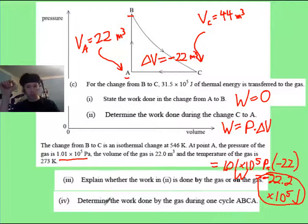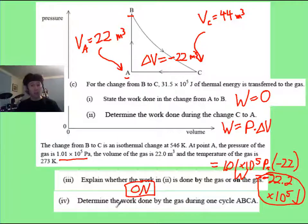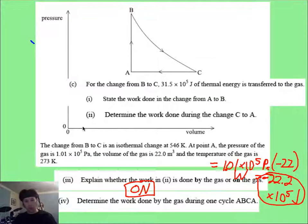Now pause it, see if you can solve these next two parts here. Part three, is it by the gas or on the gas? Whenever we squish and contract a gas, we say that we are doing work on it. So the answer is that it is on the gas. And that negative sign also tells us that. Then it wants to know the work done by the gas during one cycle.